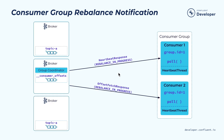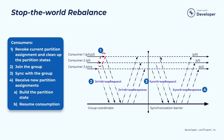Now let's look at the rebalance process. Once the group coordinator notices that a rebalance is needed, the first thing it will do is send a response piggybacked on the heartbeat to indicate to each consumer instance that a rebalance is needed. Some people may be familiar with this stop-the-world rebalance process — this is actually an issue we used to have. Let's say initially you have two consumers and a new consumer, consumer three, joins, which triggers a rebalance. The first thing the existing two consumers have to do is revoke the assigned partitions they have.